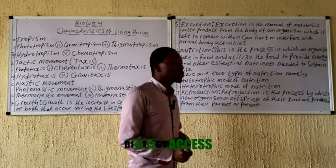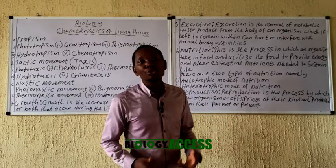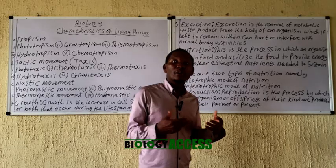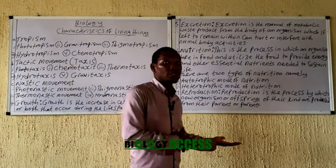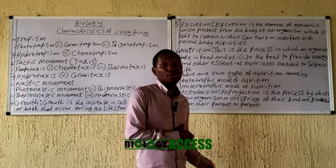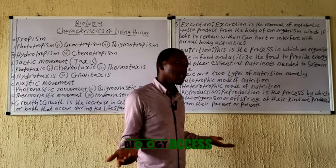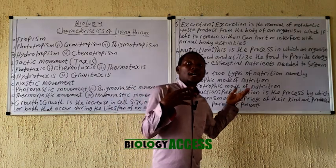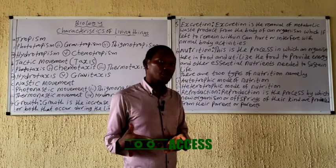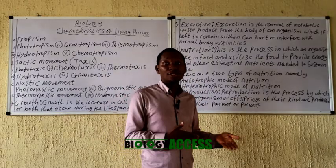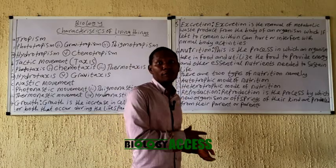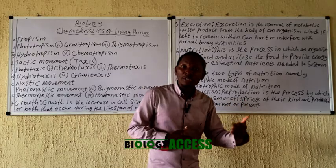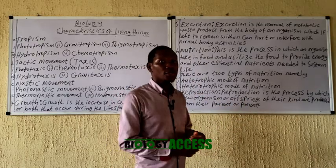The last characteristic is reproduction, which involves living organisms producing offspring of their kind, either by one or two parents. In asexual reproduction it can result from one parent, while sexual reproduction involves two parents. We have two types: asexual and sexual modes of reproduction. Details of various reproductive systems in different organisms will be covered in separate videos.